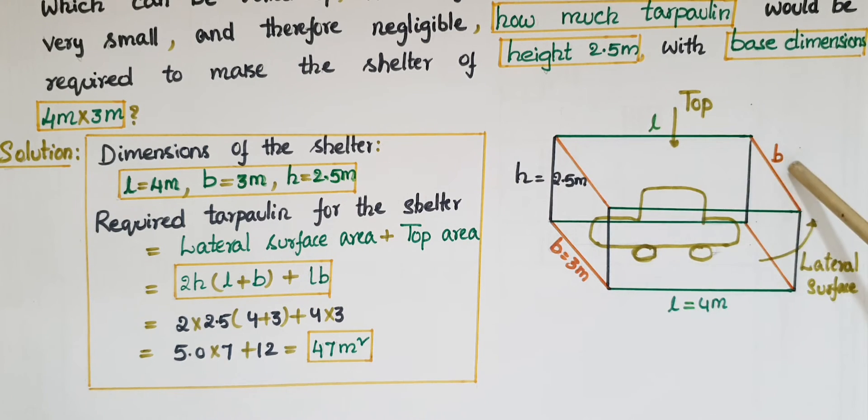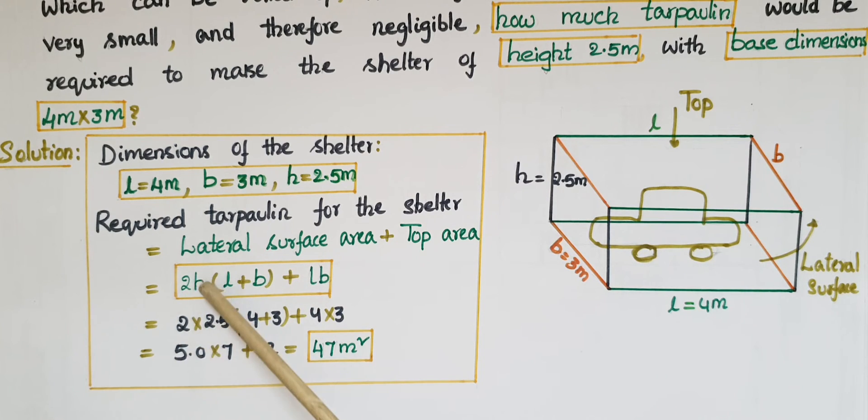Here this is length and this is breadth. So L into B plus LB. And 2 into height is 2.5 meters, so 2.5 into 4 plus 3 plus 4 into 3. That is equal to 5 into 7 plus 12, that is 47 meters square.